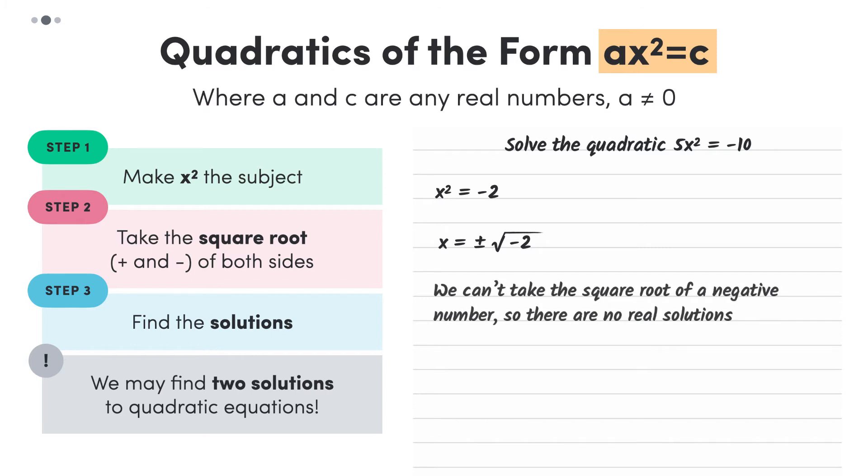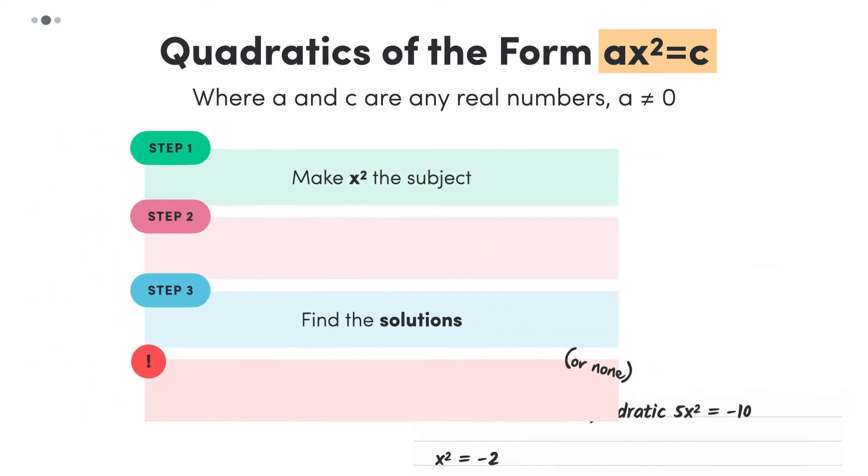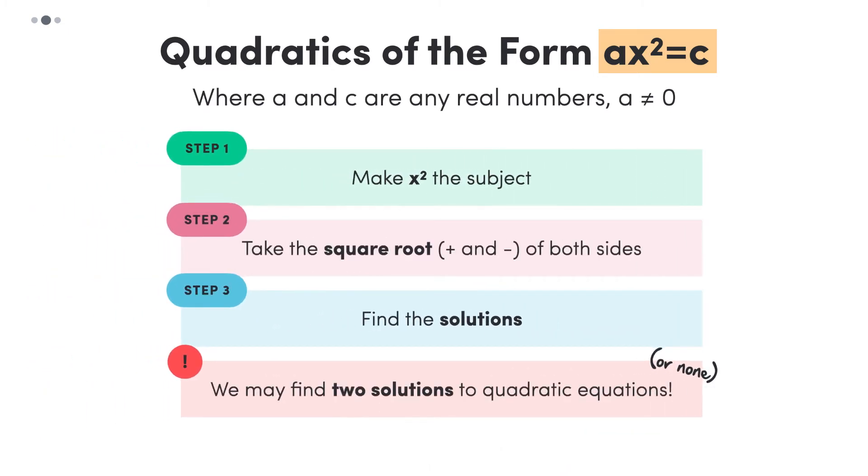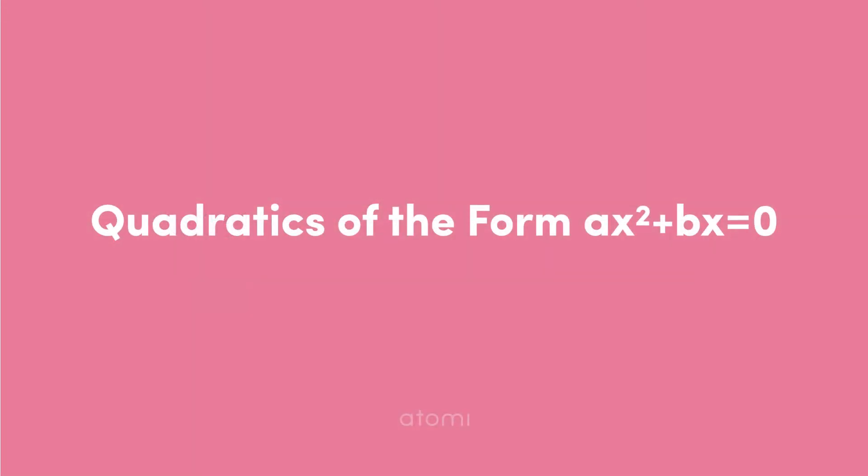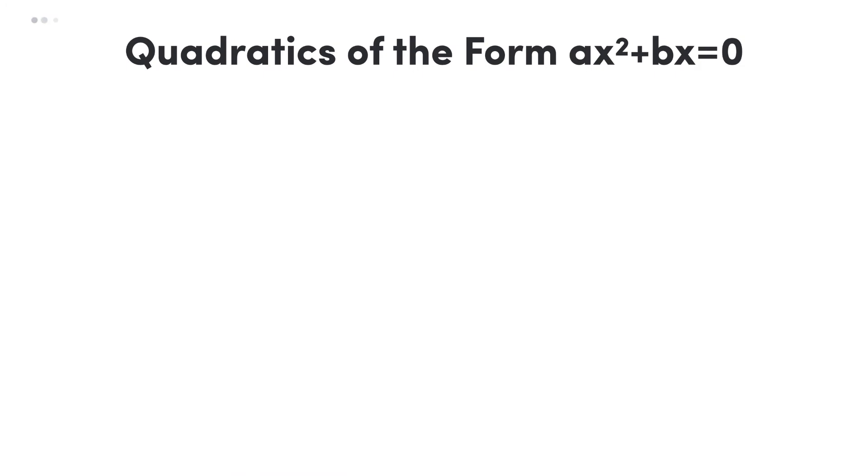But here, we can't solve this equation because we can't take the square root of a negative number. So, when x squared equals some negative number, we end up with no real solutions to the quadratic. Now that we know how to use these steps to solve quadratics of the form ax squared equals c, let's take a look at solving quadratics of the form ax squared plus bx equals 0.